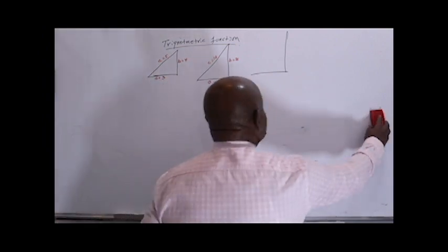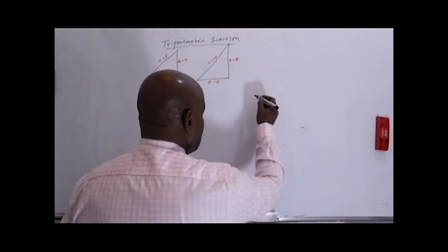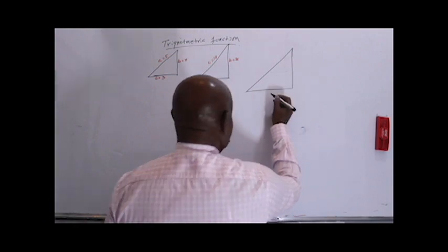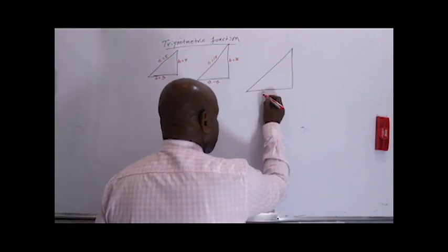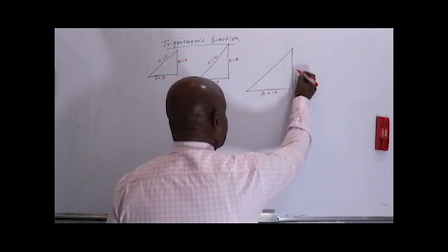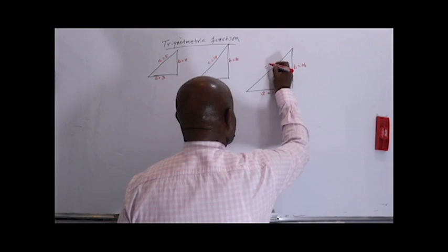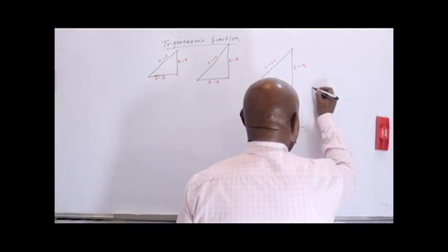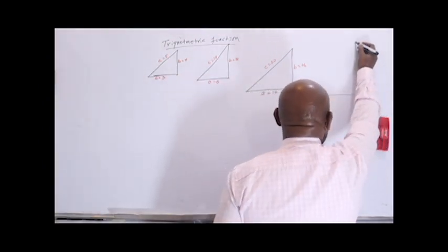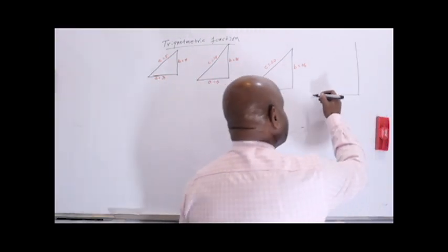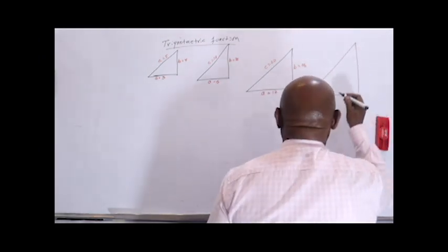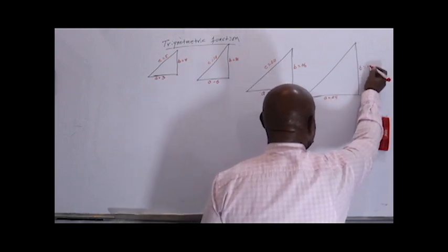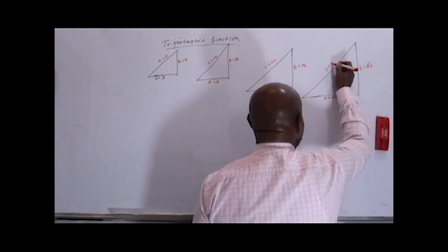The third triangle: A is 12, B is 16, and C will be 20. And one more triangle: A is 24, B is 32, and C is 40.